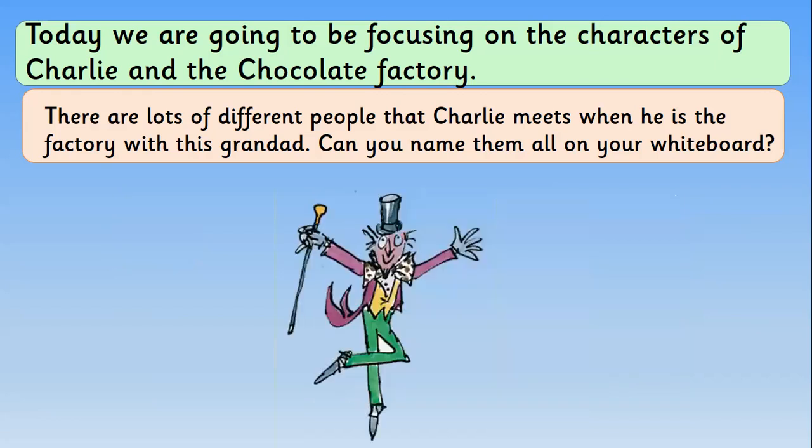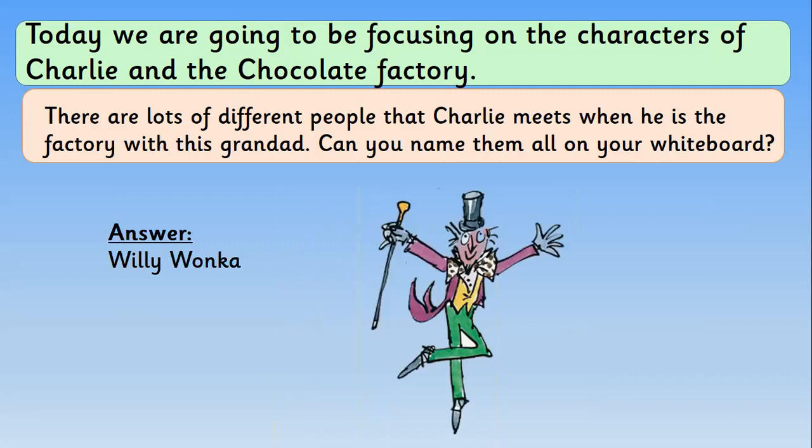Here is one of our main characters, and we're going to look a little bit more at him today. He's got a long hat, a purple tail coat, long green trousers, and a little special cane. He's one of the most important men in the story. Well done if you got Willy Wonka — and we are going to be drawing Willy Wonka alongside Quentin Blake in just a second.